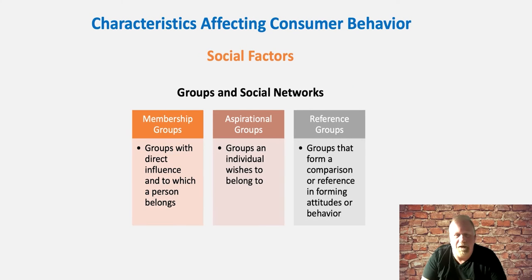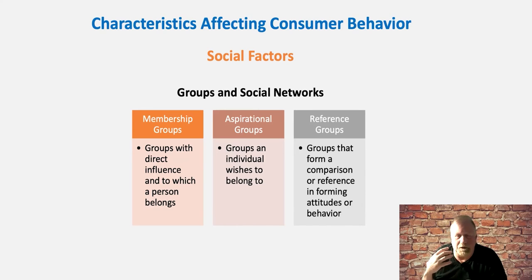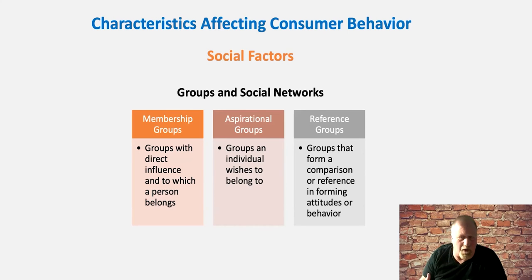One type of social group is membership groups — groups we're actually a member of. For example, if I'm in a fraternity or sorority, I'm influenced by those individuals on what I want to consume: what type of jewelry to wear, what type of clothing would be acceptable. All those kinds of things define our membership group and help shape our purchase decisions.